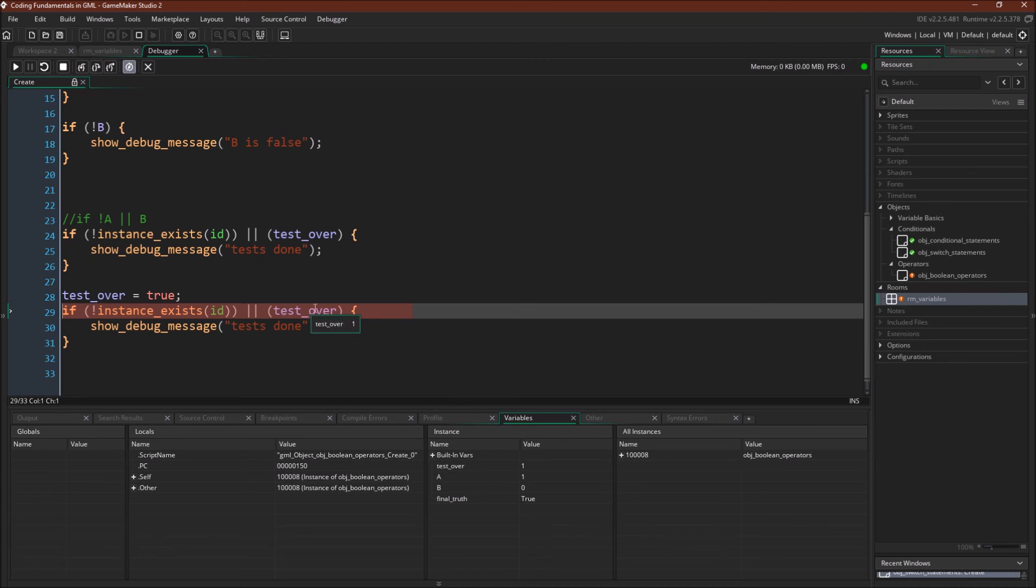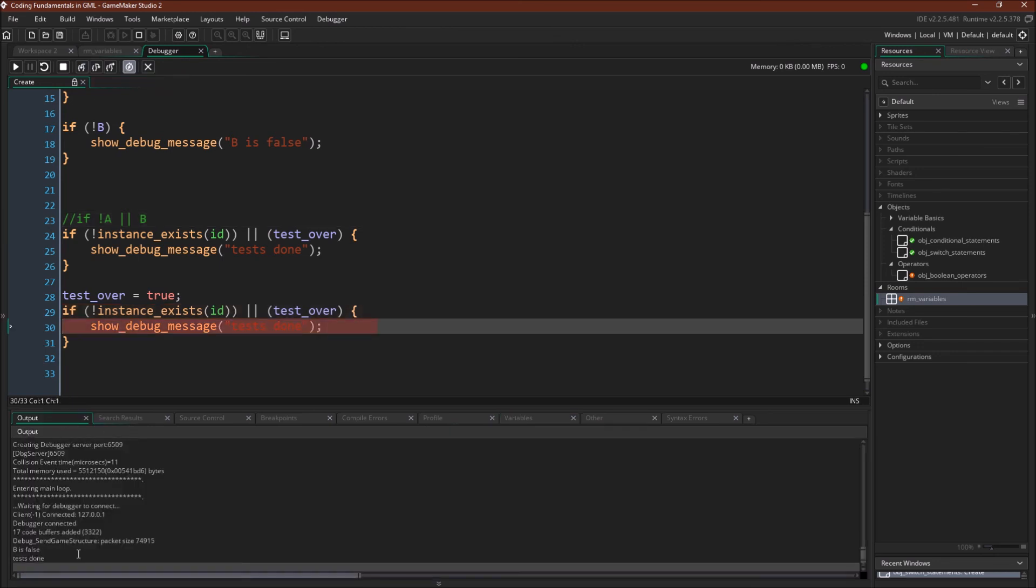So this is still going to be false because this instance does exist, so that will be true. And then we're negating that, flipping it to false. But now test over equals true. So since one of these two is true, and we're using an or statement, and this side over here, B, is true, this code is going to evaluate to true. And we're going to run test done.